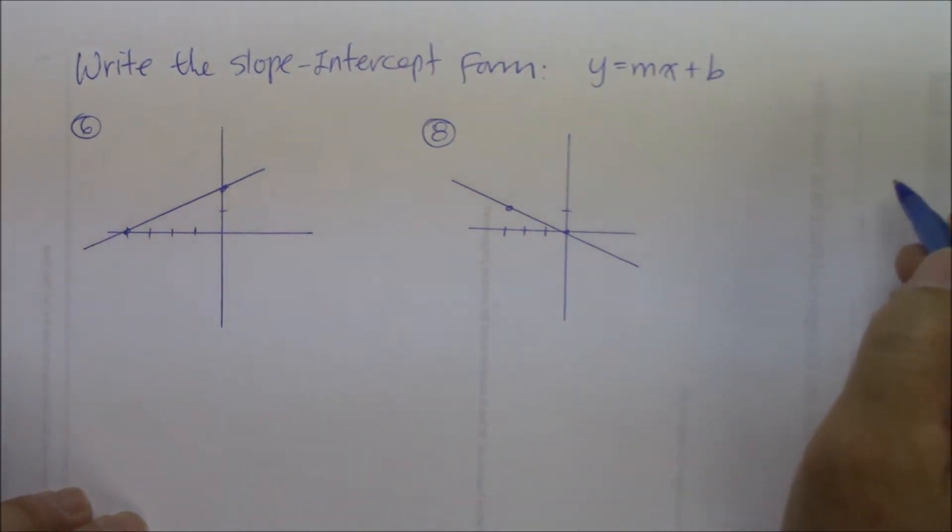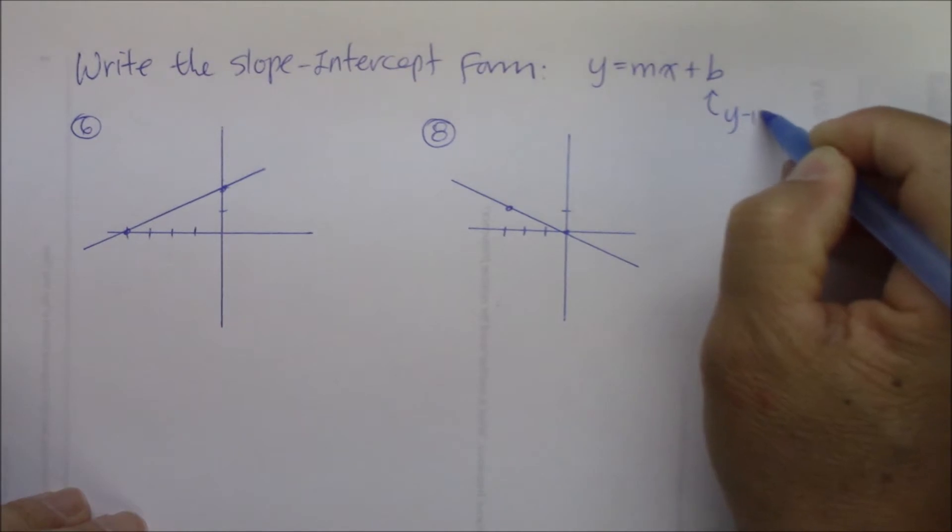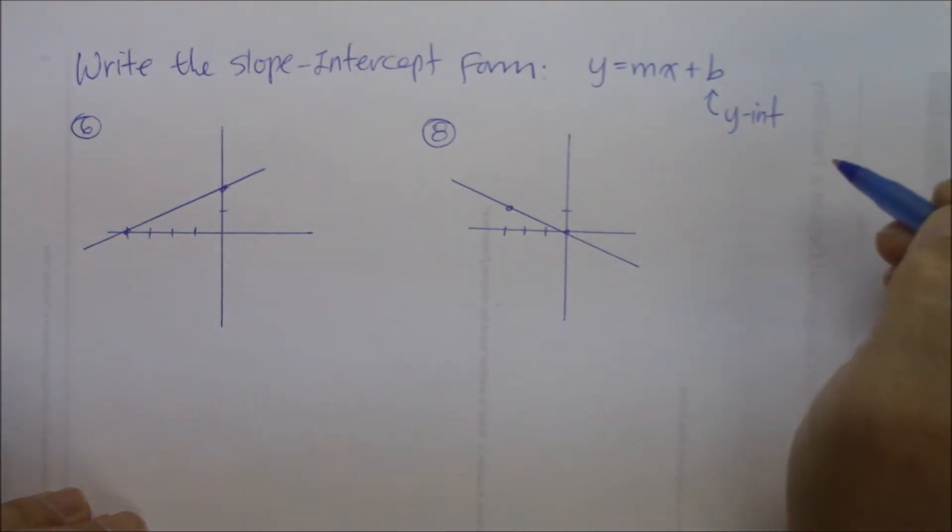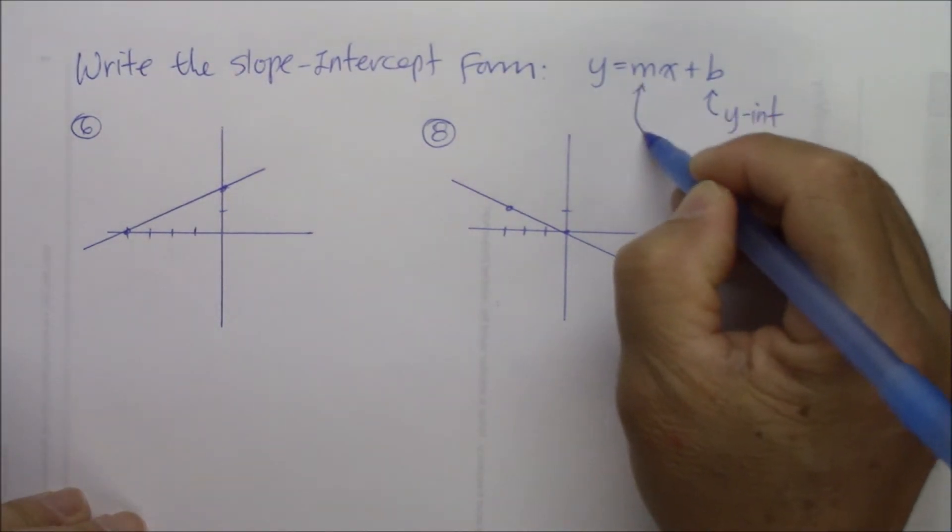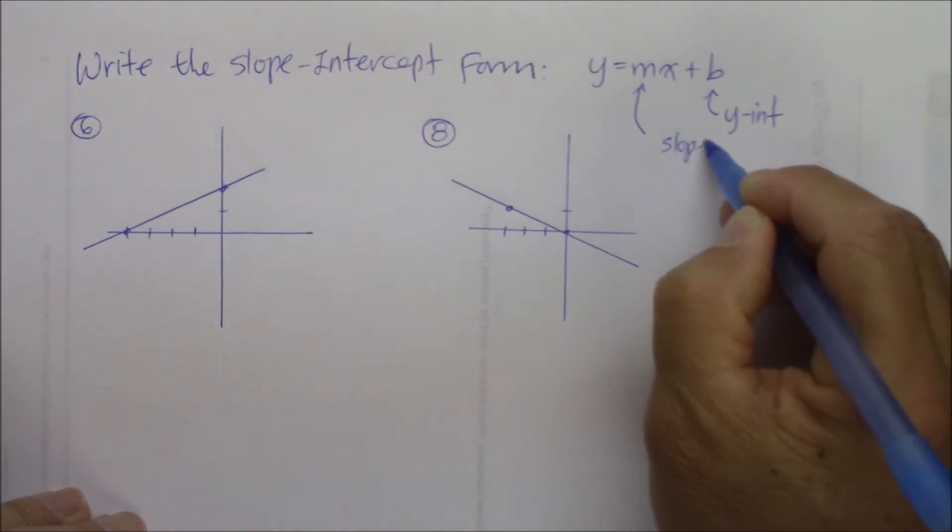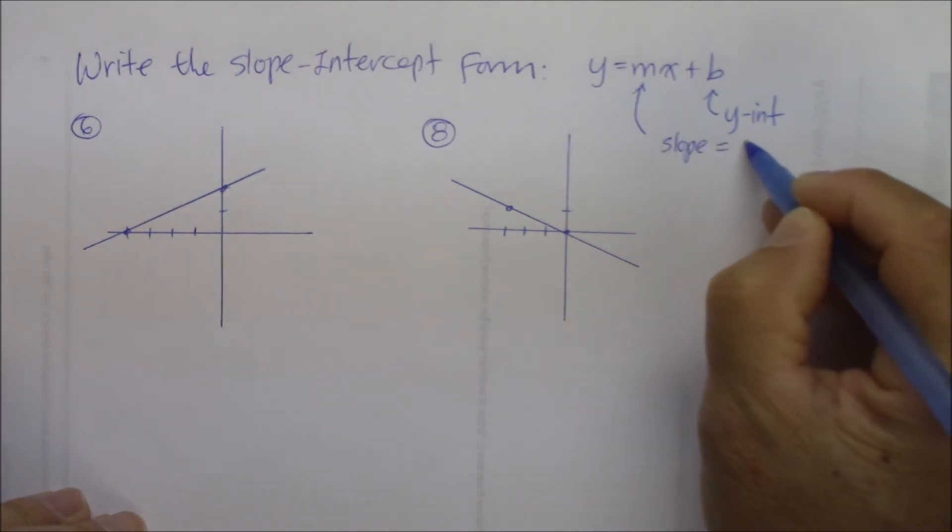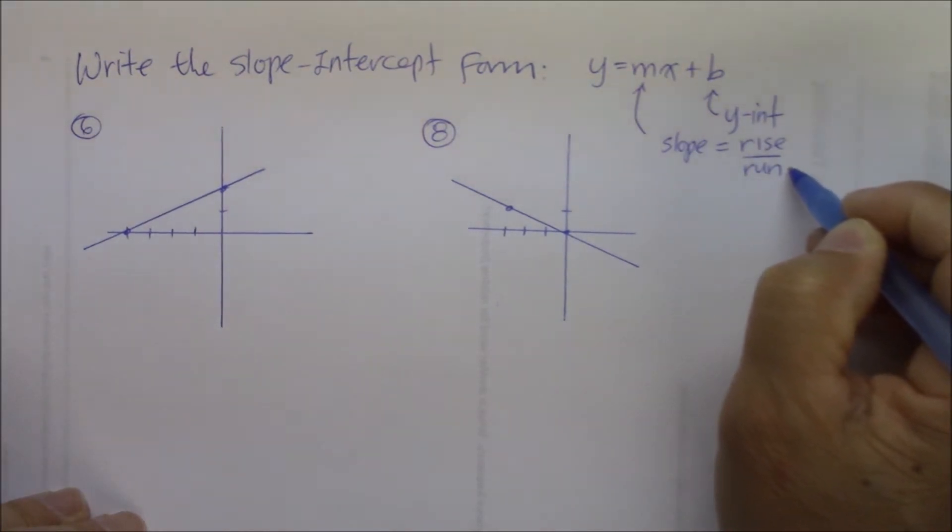And we also know that the b represents the y-intercept of the graph. And then the m represents the slope, which is actually a quotient of rise over run, also known as the rate of change in a given time function. It's a rate of change.